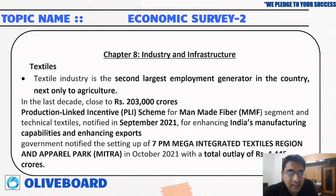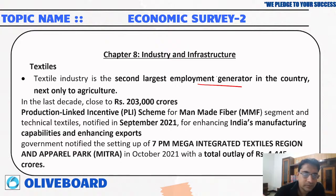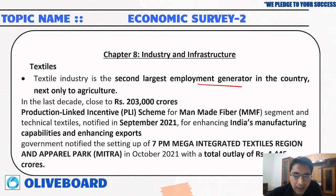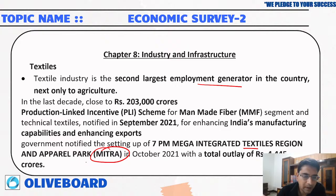The textile sector is the second largest employment generator in India, next only to agriculture. The government has provided Production Linked Incentive support for man-made fibers and other textile products. The government notified the setting up of 7 PM MITRA — Prime Minister Mega Integrated Textile Region and Apparel Parks — with a total outlay of rupees 4,445 crore.